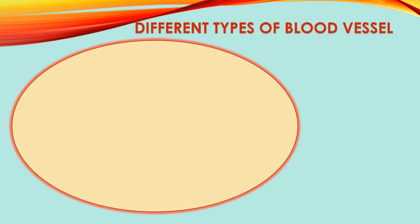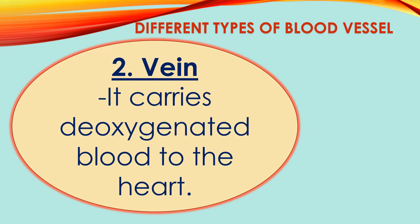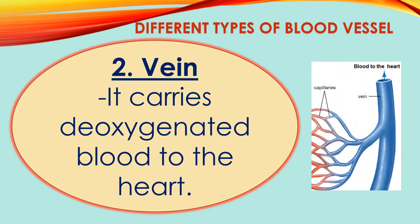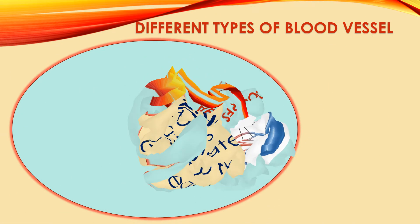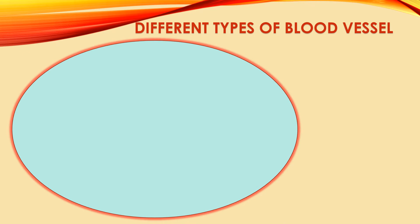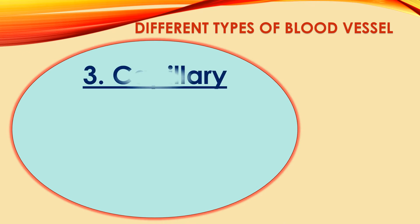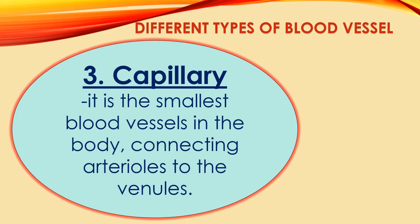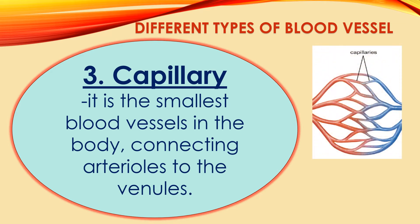The second kind of blood vessel is veins. Veins carry deoxygenated, or oxygen-poor, blood to the heart. The last kind of blood vessel is capillaries. Capillaries are the smallest blood vessels in the body, connecting the smallest arteries to the smallest veins.